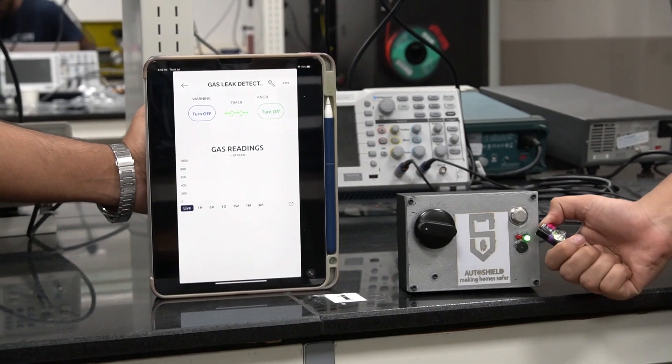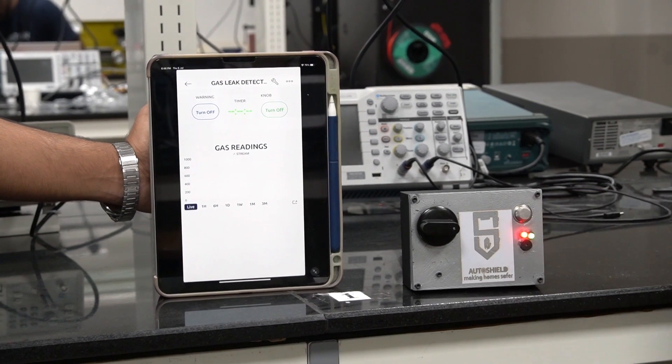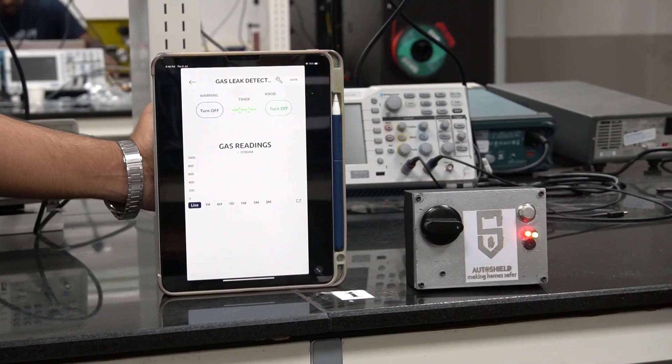With our innovative AutoShield app, you can remotely monitor the operational status of your stove, receive live gas readings, and bring control right to your fingertips.